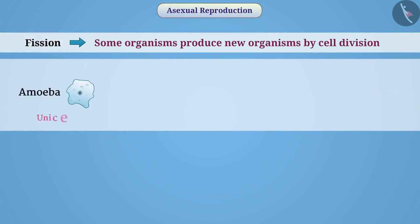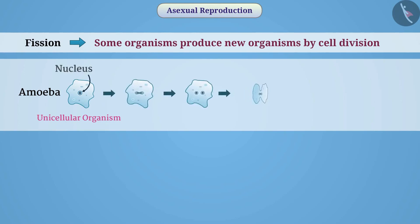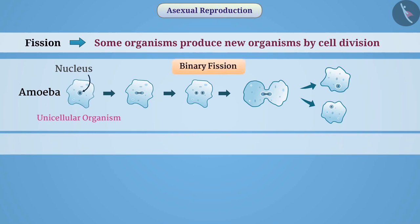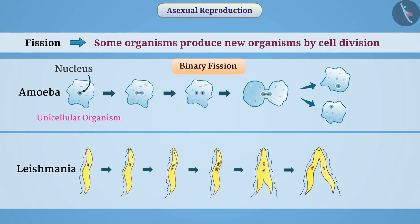Amoeba is a unicellular organism. In amoeba, reproduction begins with the division of the nucleus. When division of the nucleus is complete, the cell also divides into two parts. This division can occur from any part of the amoeba. During the division process, each cell carries one nucleus. The formation of two cells by the division of one cell is called binary fission.